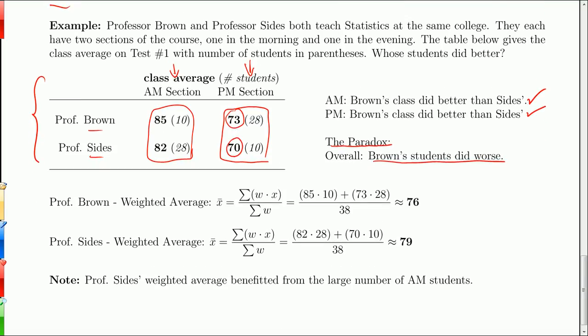If you look at Professor Brown's weighted average, you have 85 times 10 comes from here. That's that 85 weighted. Plus 73 times 28. Oh, sorry. It's not there. So 73 times 28 comes from here, right? Because we're going across Professor Brown. So 85 times 10. 73 times 28 are the weighted means, divided by the total number of weights, which is just 28 plus 10. So you get 76. All right. Average for Professor Brown is 76.